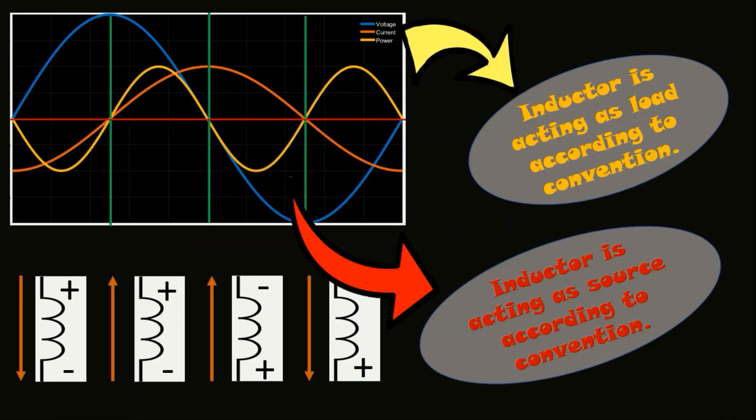Now, if we observe the inductor's property, then in these two parts, the inductor is behaving as a load and in these two parts, the inductor is behaving as a source. So, whenever there is a negative power in a load, it means that it is supplying back the power that it has stored.